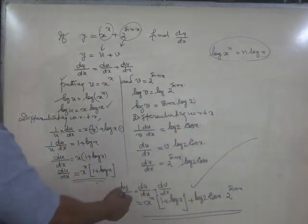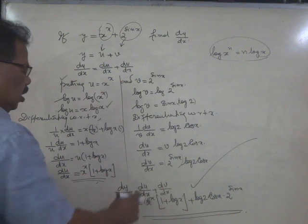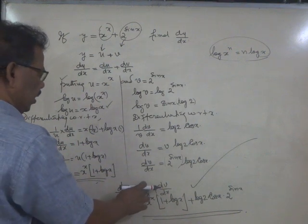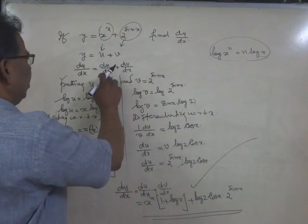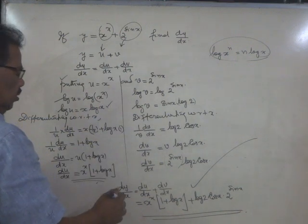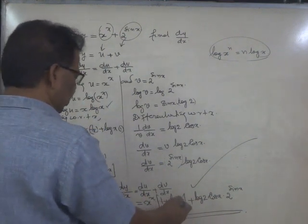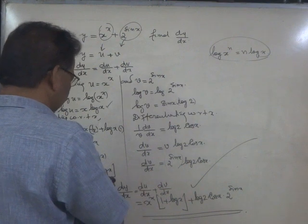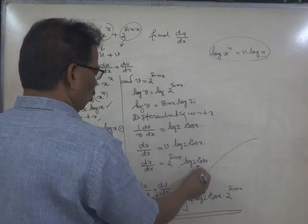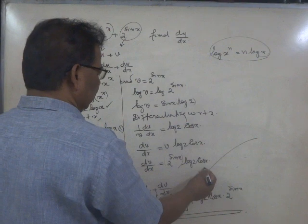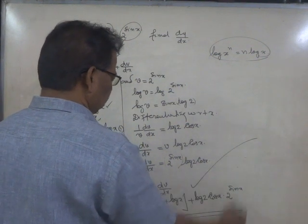The answer dy by dx will be du by dx plus dv by dx. That is: x raise to x into 1 plus log x, plus log 2 cos x into 2 raise to sin x.